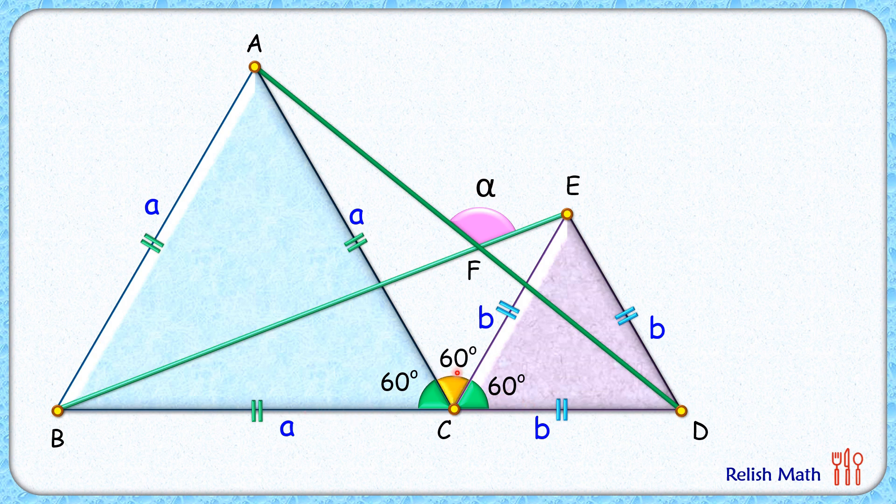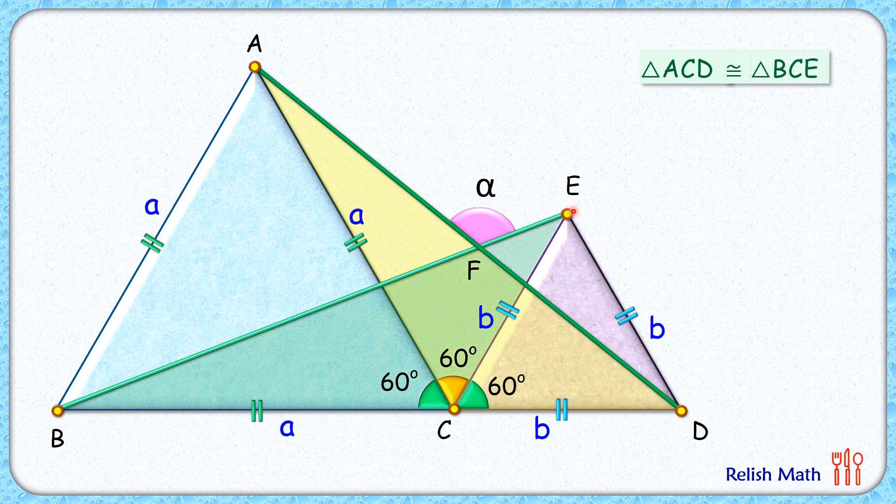So this angle in between is also 60 degrees. Now, if you look at triangle ACD and triangle BCE, the sides are a centimeters and b centimeters, and the angle between them is 120 degrees.